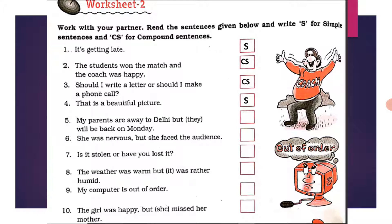'My parents are away to Delhi but they will be back on Monday' — two independent clauses forming a compound sentence. 'She was nervous but she faced the audience' — 'she was nervous' is one clause, then 'but' is used as a conjunction, then another independent clause. Two independent clauses — compound sentence.